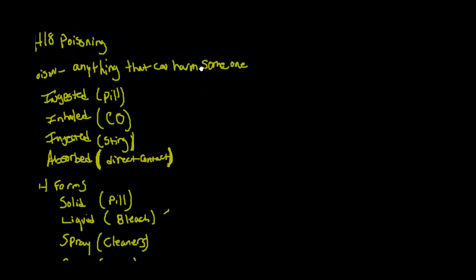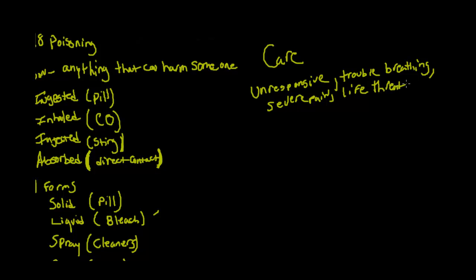So, what do we do for somebody that has ingested a poison? How do we care for somebody like that? The care is going to depend on really what you find. The first thing you want to do is if you find somebody that's unresponsive, trouble breathing, maybe they have severe pain, or anything that's life-threatening. So, anything that appears to be life-threatening, you want to call 911. So this is your first step. Call 911.